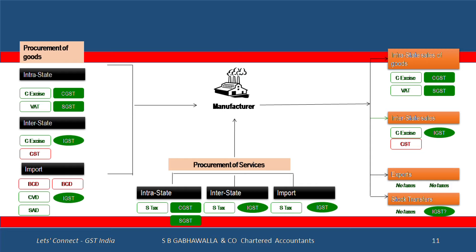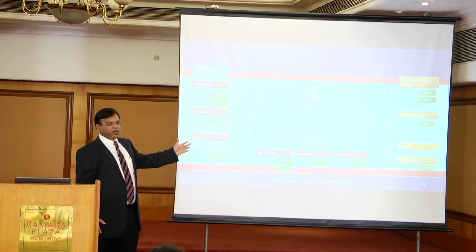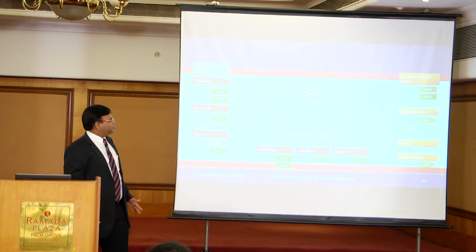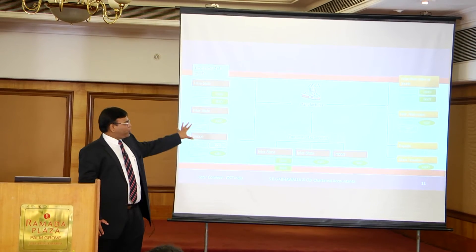On import, today there's basic customs duty, CVD, and SAD. Instead of CVD and SAD, both get replaced by IGST, which continues to be available as credit. On services, today you have service tax; instead of that you will have a CGST/SGST combination or an IGST combination, again available as a credit — so not a major concern on the procurement side.